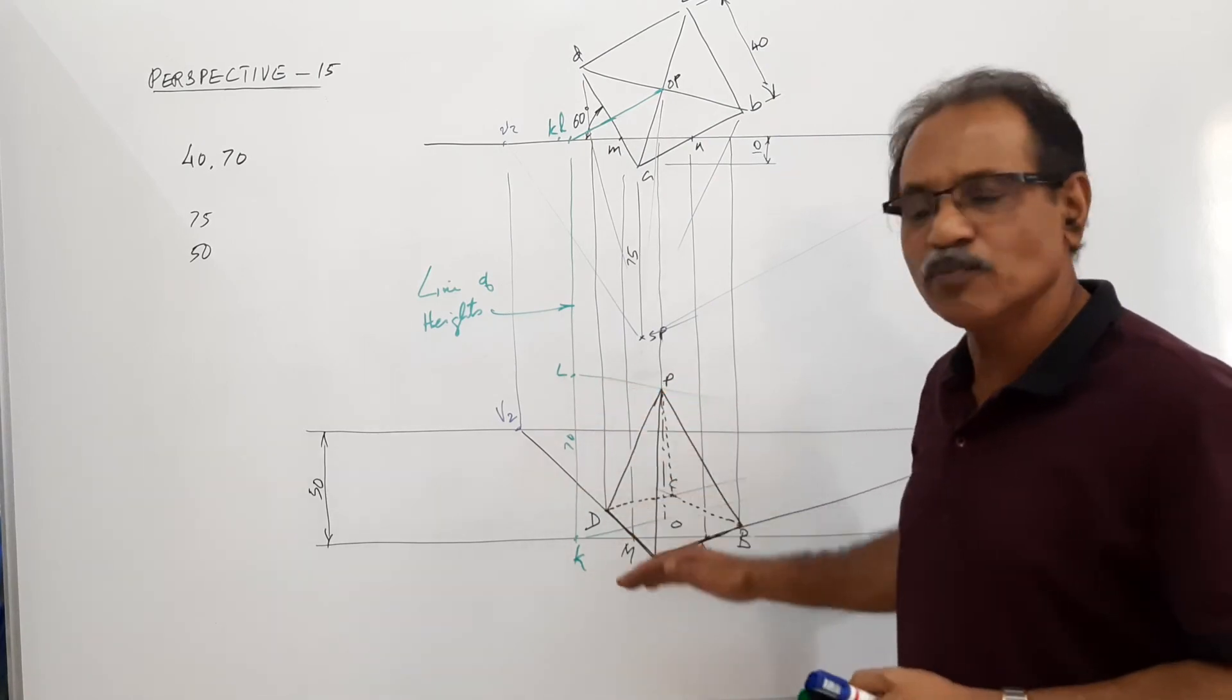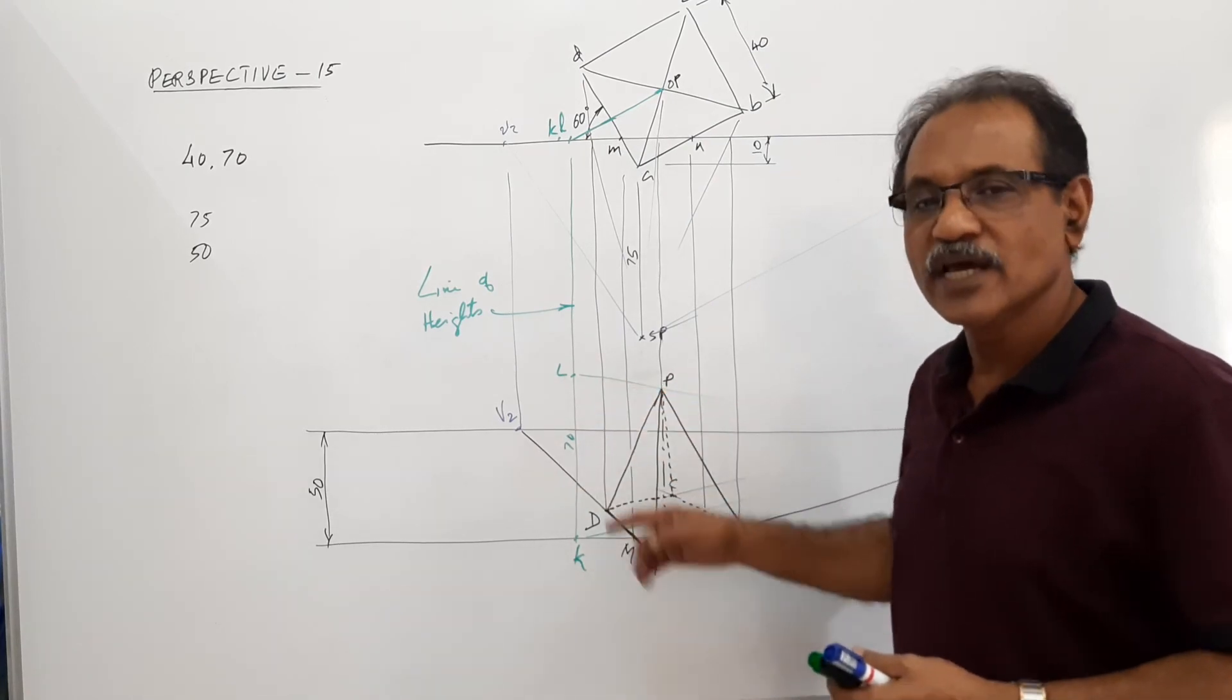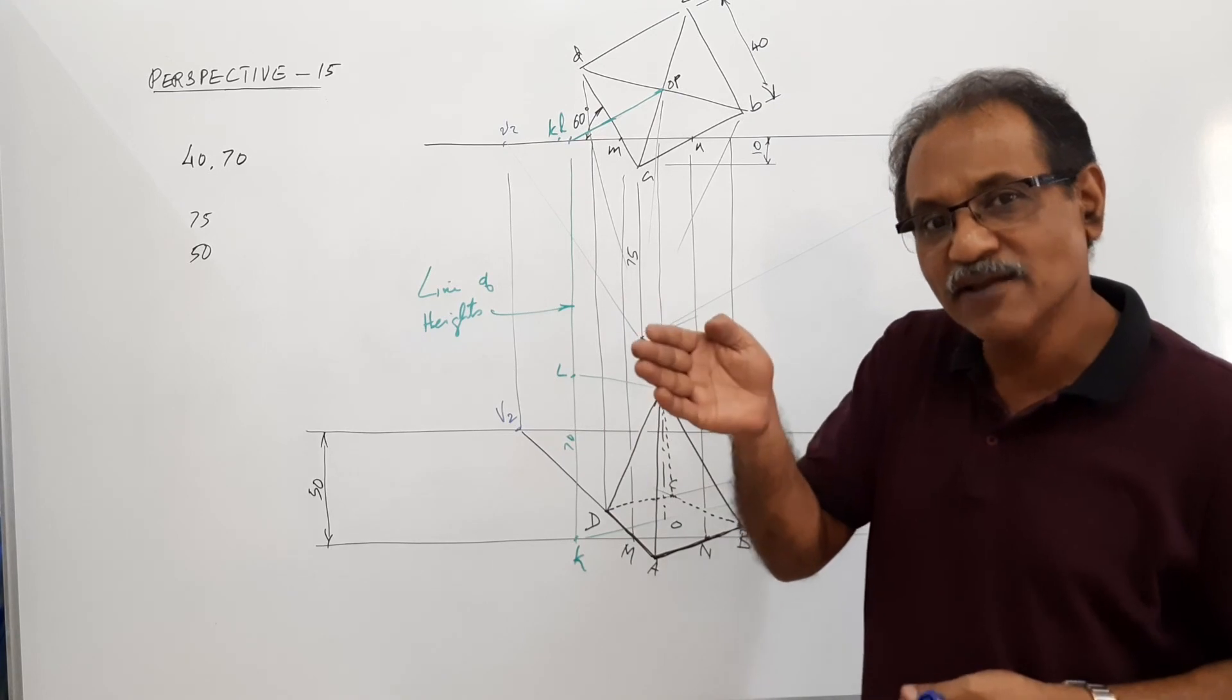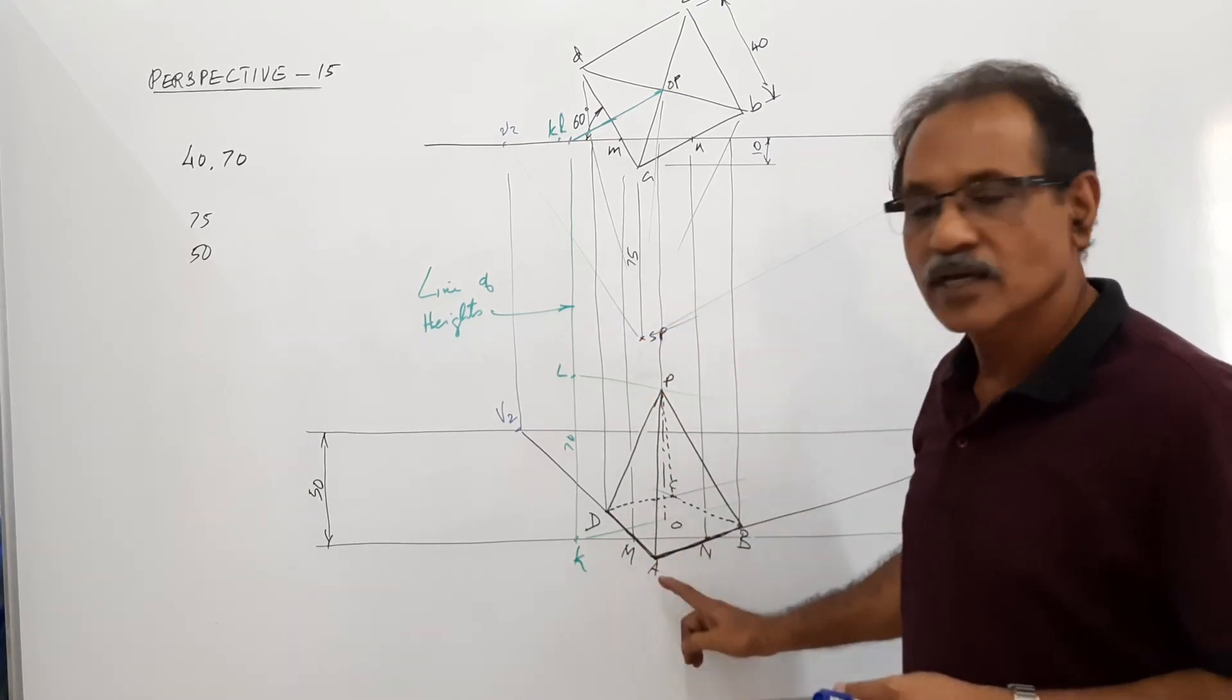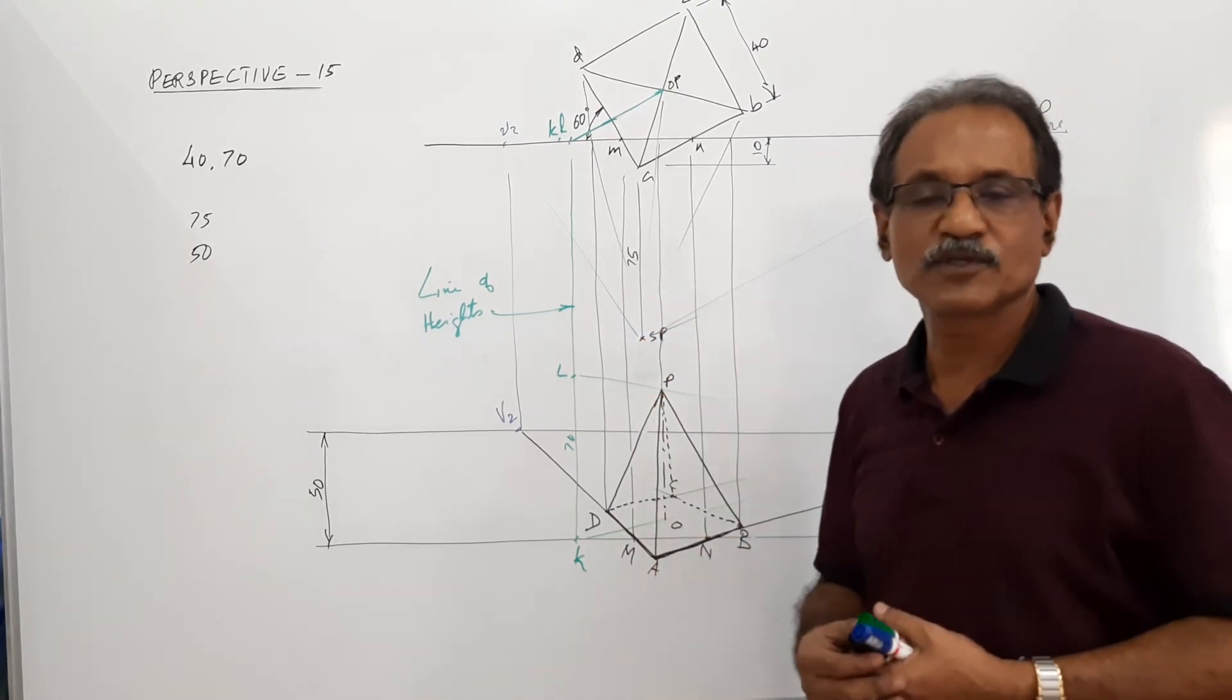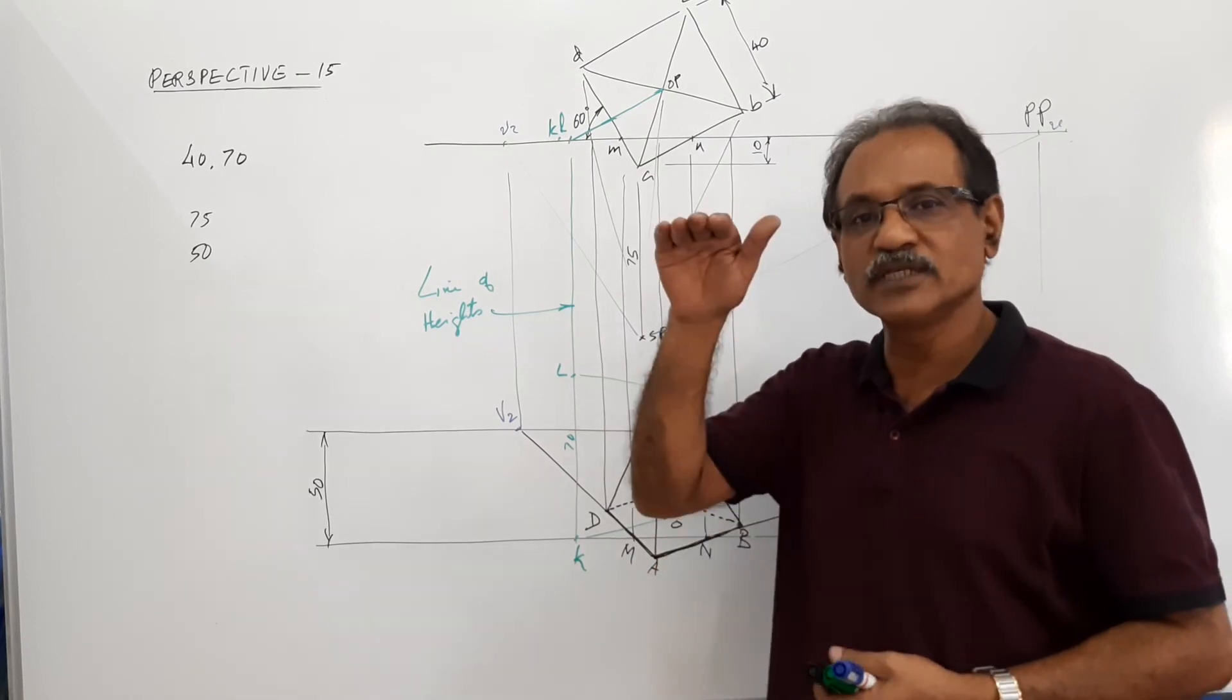If a point is in front of BP, it always need not be below GL. It will come below GL if it is in front of BP and on the ground. Provided the observer is standing, the observer has got some reasonable height.